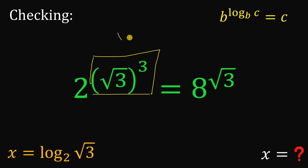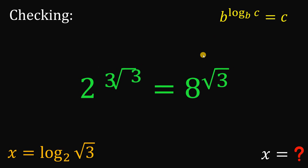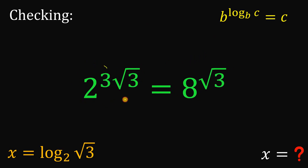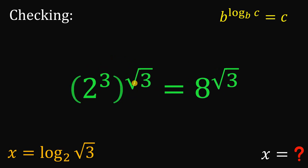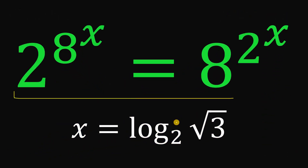If we simplify square root of 3 raised to the power of 3, we have square root of 3 times square root of 3 times square root of 3. Square root of 3 times square root of 3 is just 3, multiplied by square root of 3 gives 3 times square root of 3. Using again laws of exponent, the left-hand side we can rewrite as 2 raised to the power of 3 raised to the power of square root of 3. And 2 raised to the power of 3 is just 8. So the left-hand side and right-hand side are equal — therefore this value of x is absolutely correct. The answer is x equals logarithm of square root of 3 to the base of 2, and we are done.